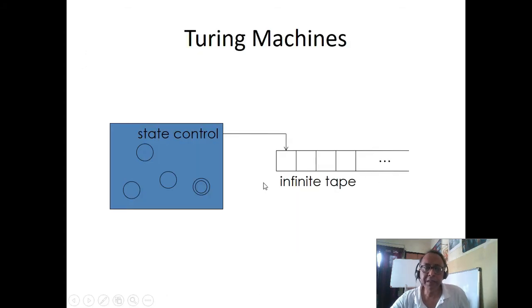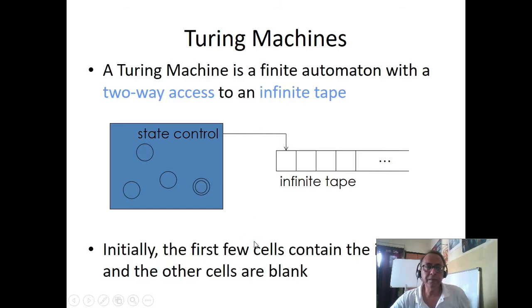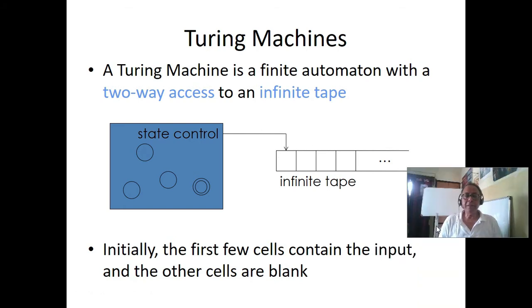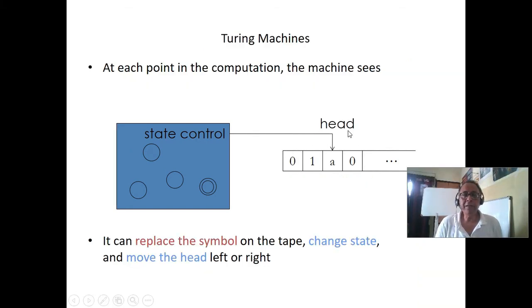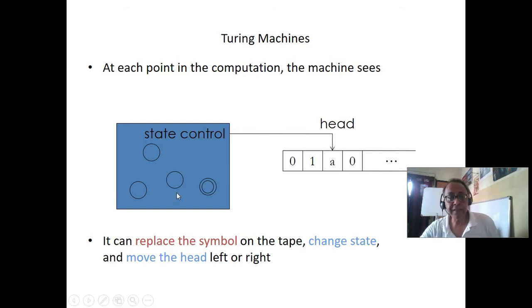Turing machine has no stack. It is very, very interesting. There is an infinite tape, and the input symbols are there, and this is the finite state machine. Some states are accepting and some states are not accepting. Two-way access - one thing is it has a read head and write head. It can go left and right. Initially the tape has the input, and at each point the computation - the machine sees, can replace symbols, change state, and move the head right or left. This is a very important definition of the Turing machine.